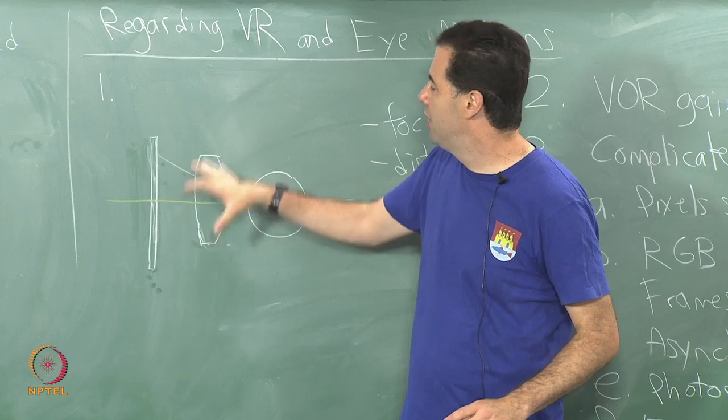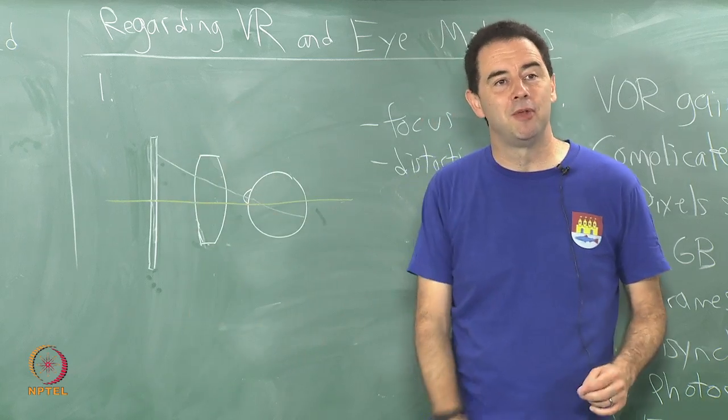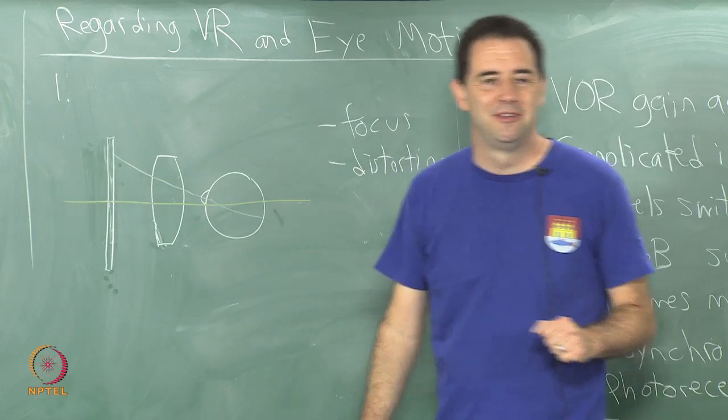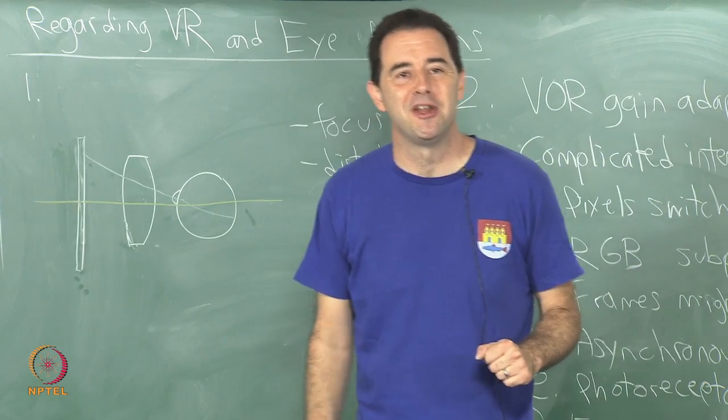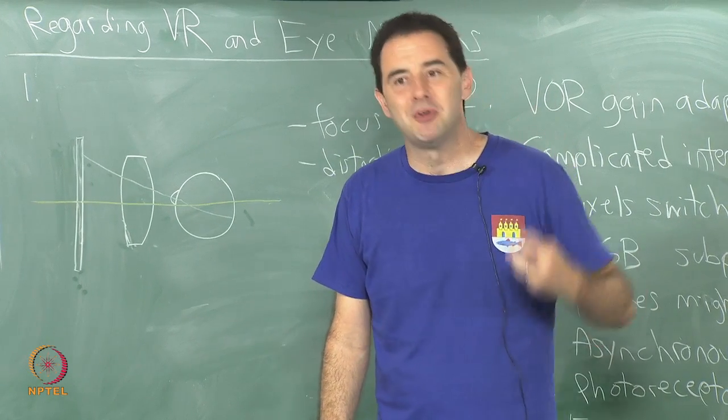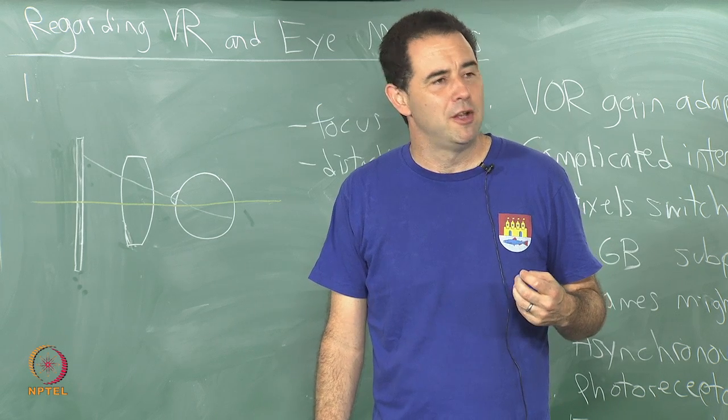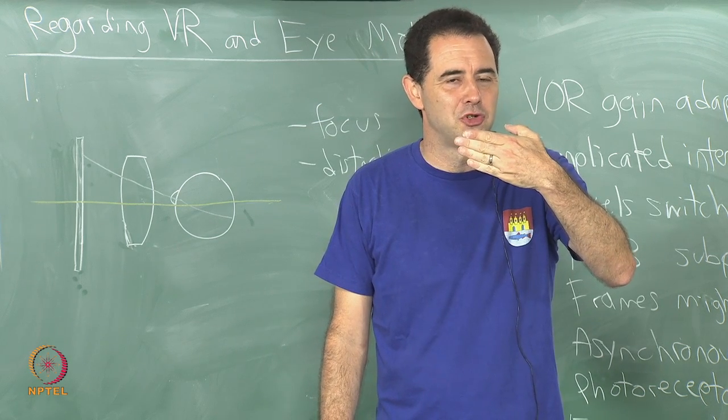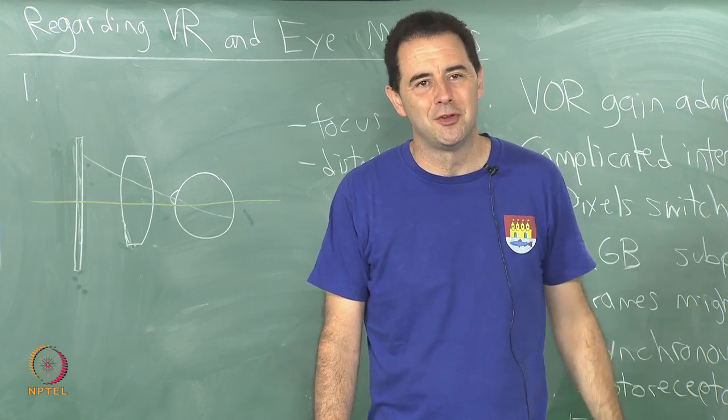That means that this display is training you, this head mounted display is training you to separate vergence from accommodation. It is telling your brain no, no, you do not need to do that anymore.